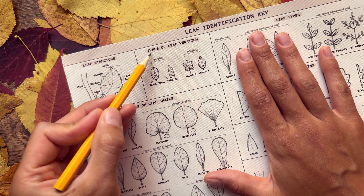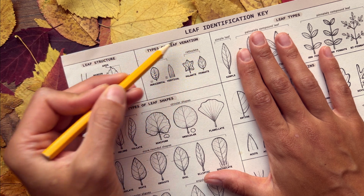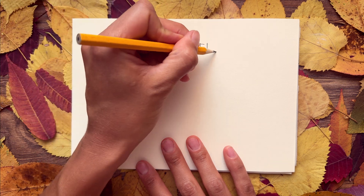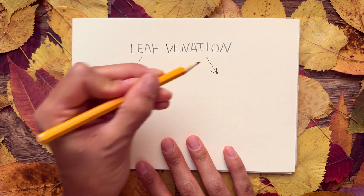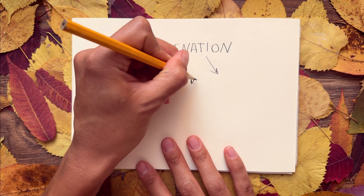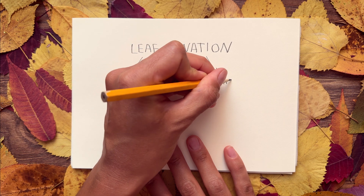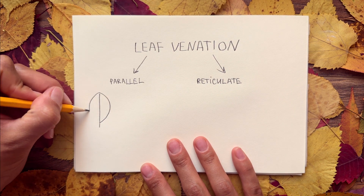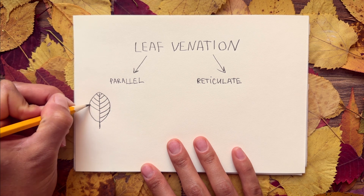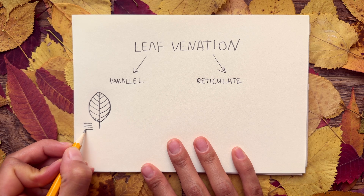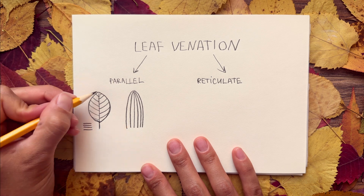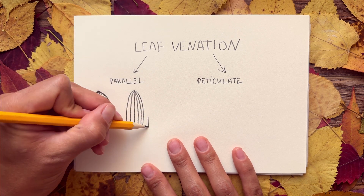Now let's move on to venation patterns — another key detail that helps us understand what type of leaf we're looking at. Leaf venation is usually divided into two main types: the first is parallel and the second is reticulate. Let's start with parallel venation. All the veins run in the same direction, side by side. In some leaves they're arranged more horizontally, while in others they're vertical — this vertical type is very common in grasses.